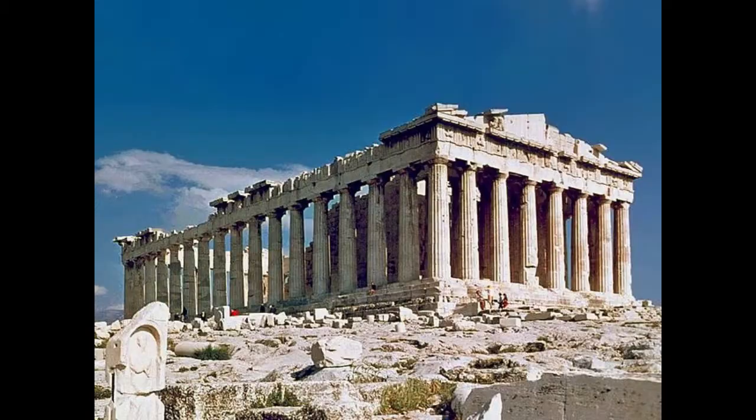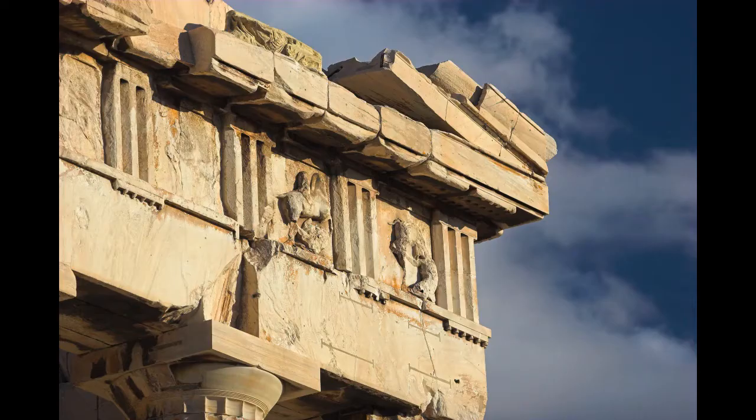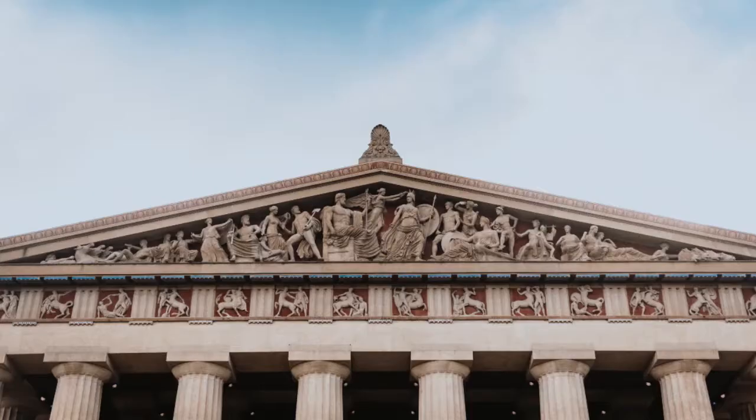The ancient Parthenon in Athens had 92 metopes on its exterior. On each side of the temple, the metopes told a different story. The Nashville Parthenon also has 92 metopes.